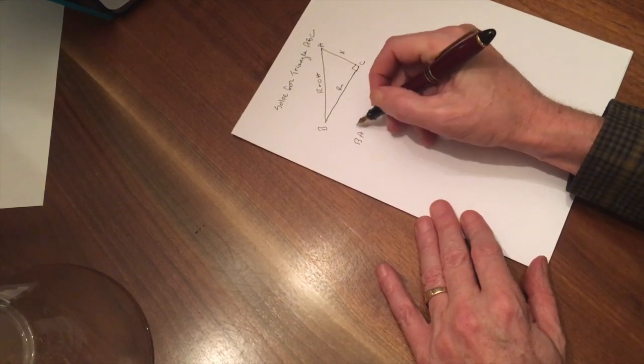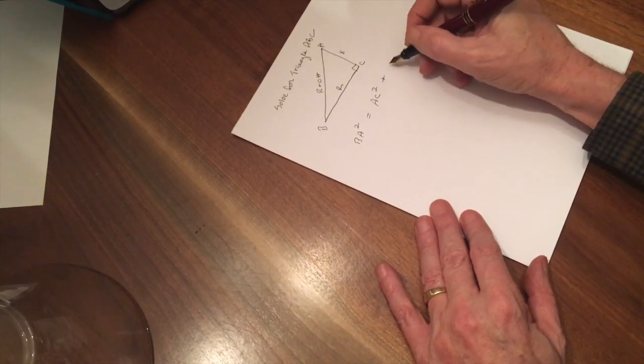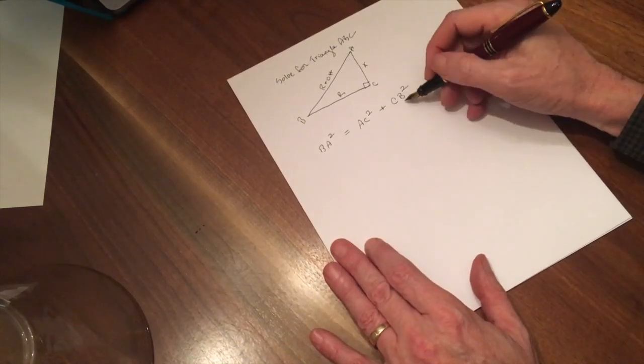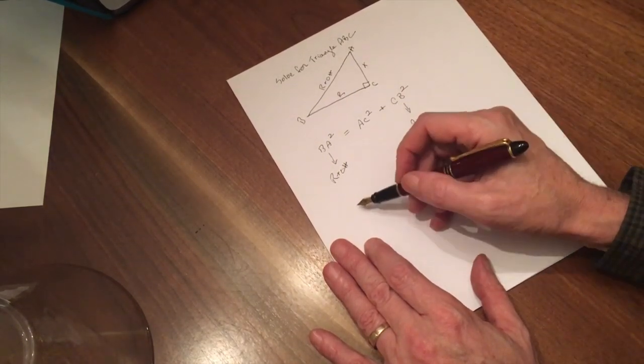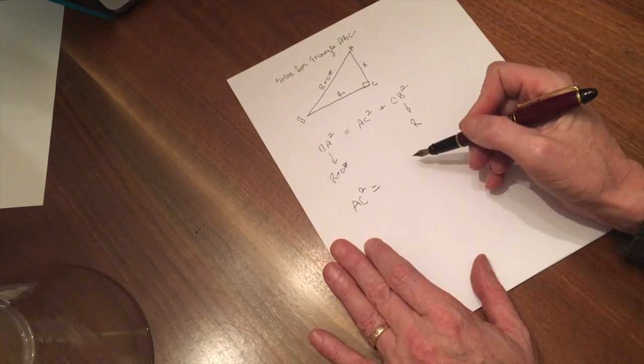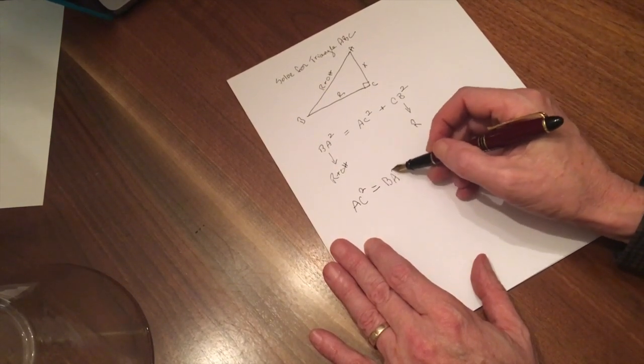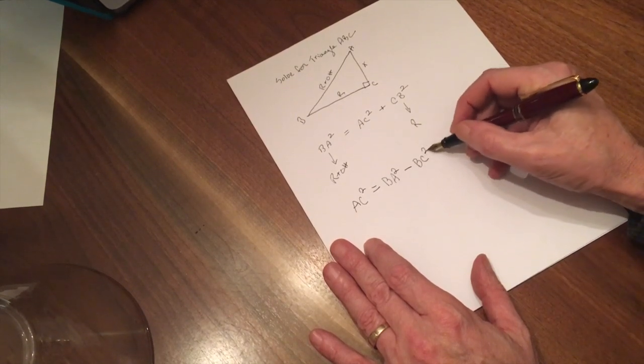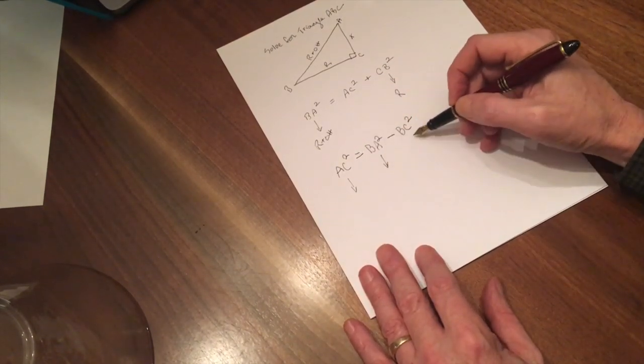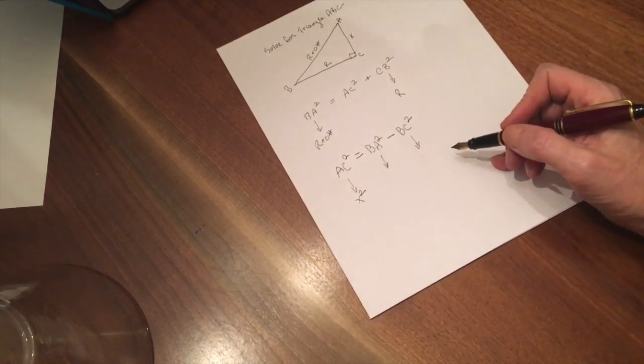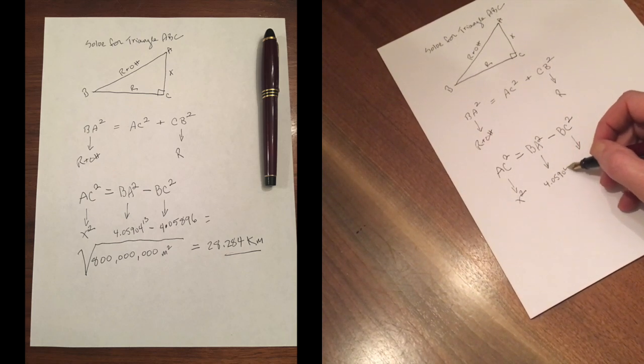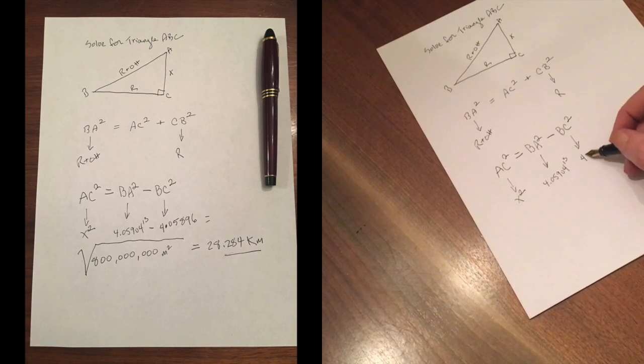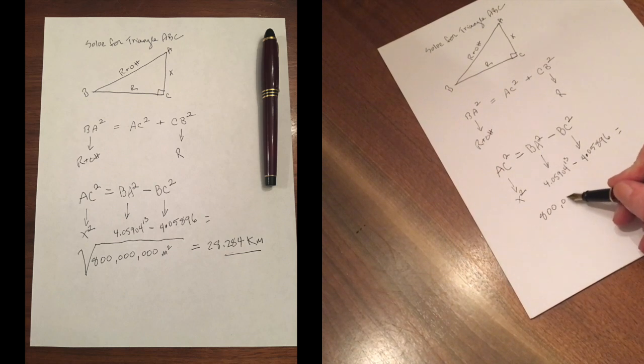Now we know that by the Pythagorean Theorem, the hypotenuse squared equals the sum of both sides squared. So if we take the square of the hypotenuse, which is the radius plus the observer height, subtract the square of the radius of the Earth, that will give us the square of the distance from our observer position to our horizon. So solving for these, we can see that the distance from our observation point to the horizon is 28.284 kilometers, or 28,284 meters.